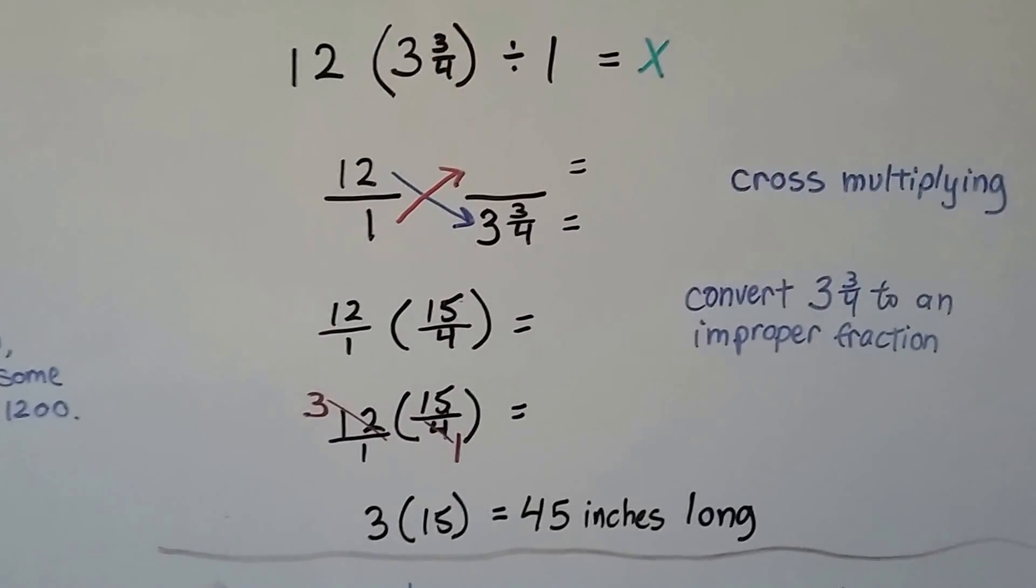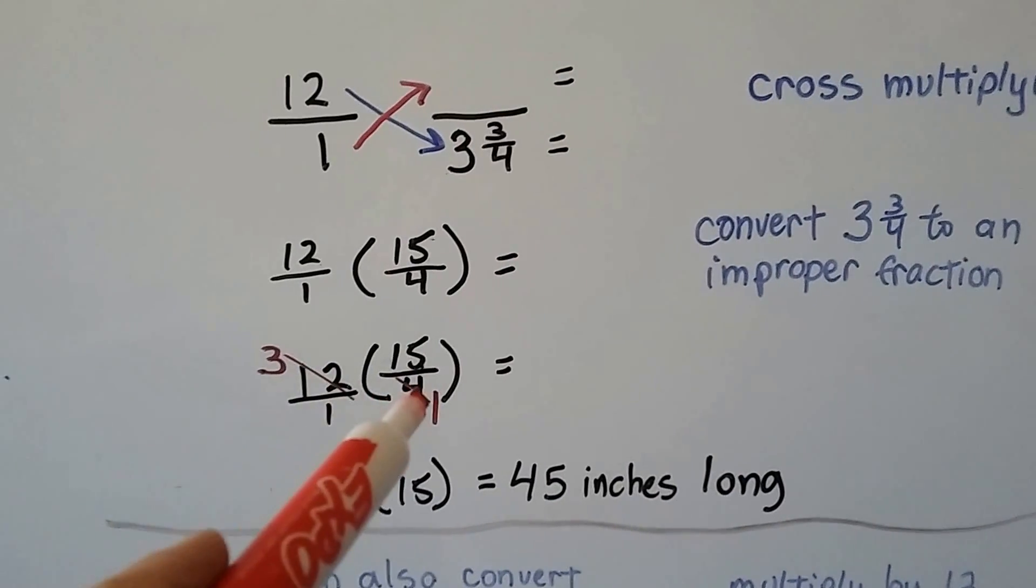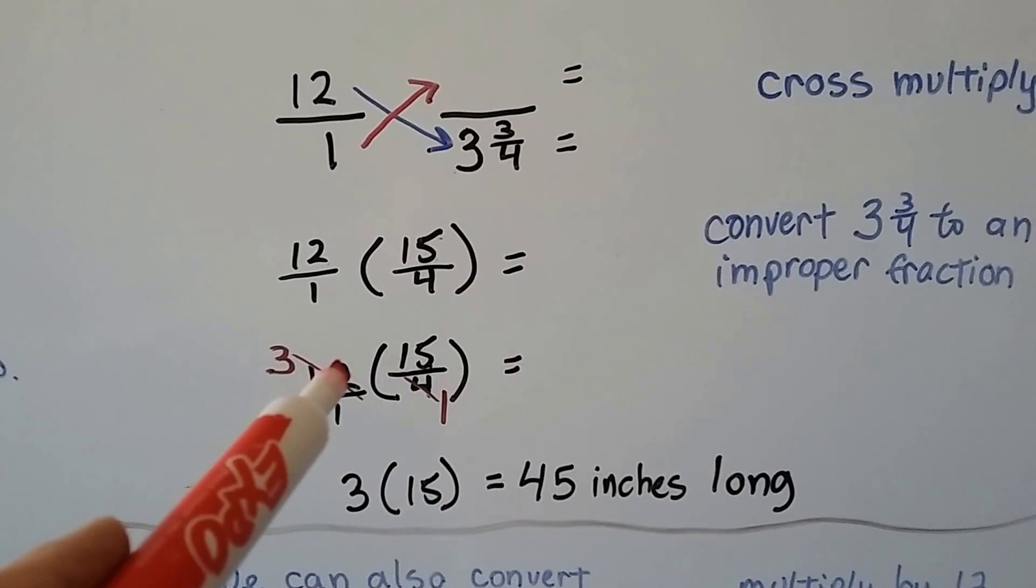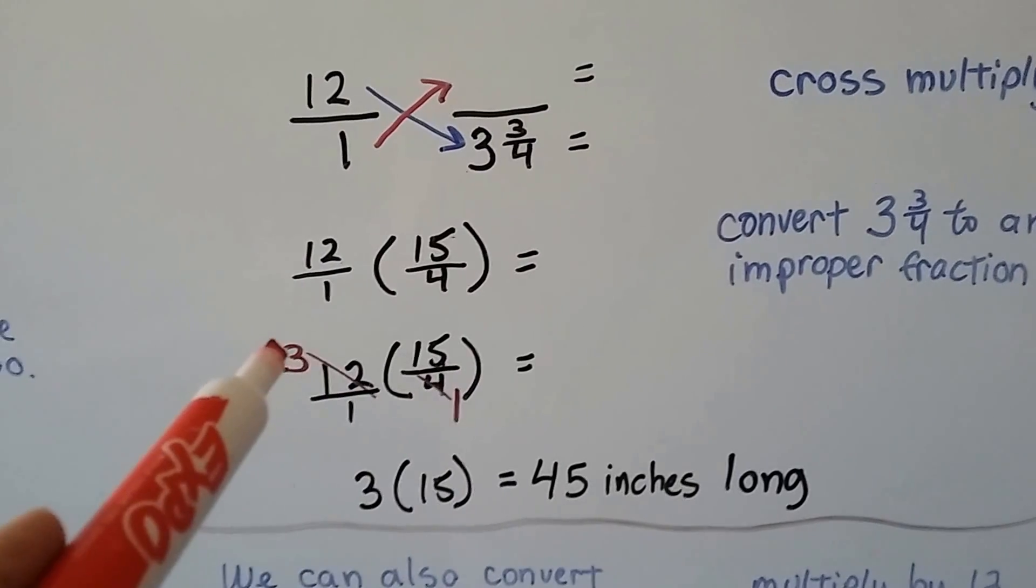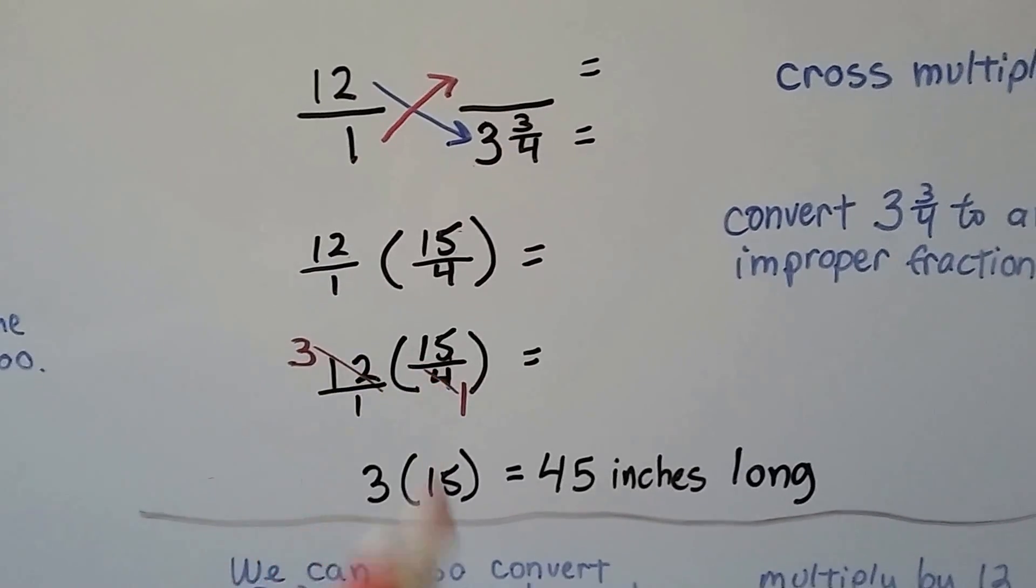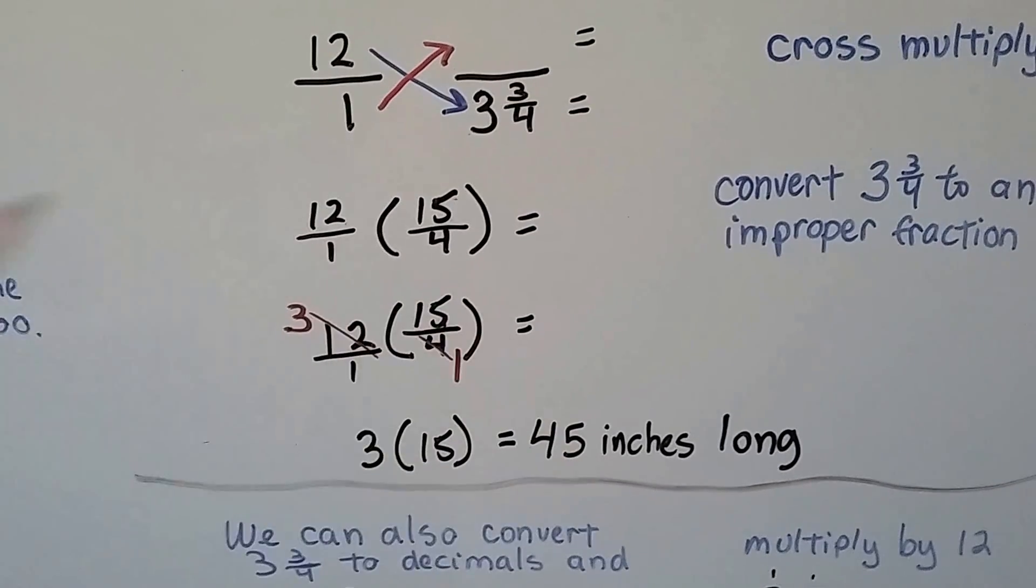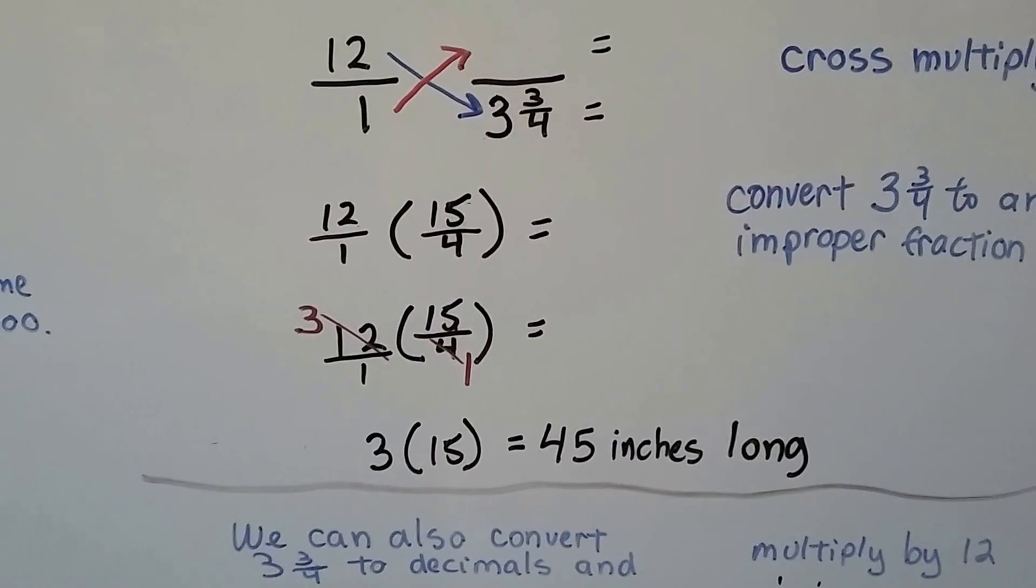Now we can just multiply straight across, but in order to keep from having to do a lot of reducing, we can cancel out. We have a 12 here and a 4 here. There's 1 four here and 3 fours here. So we have a 3 and a 1 and we cancel the 12 and the 4. Now we just have to do 3 times 15, which is 45.